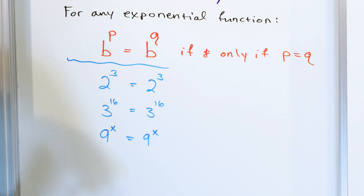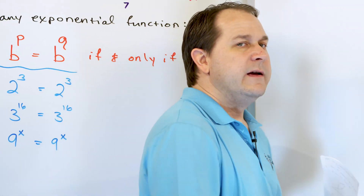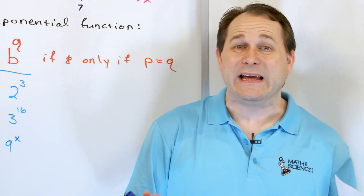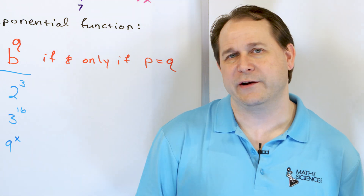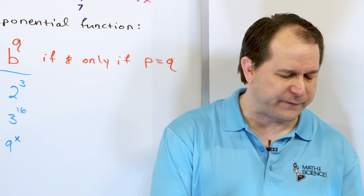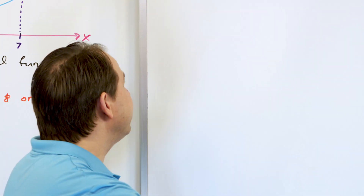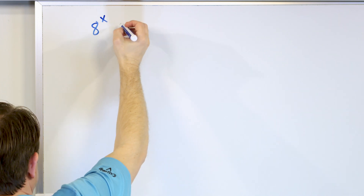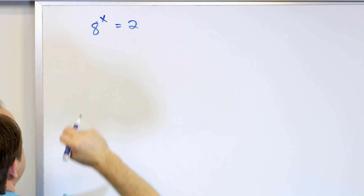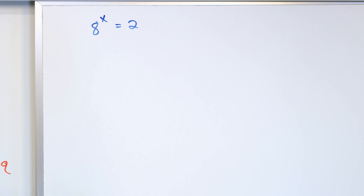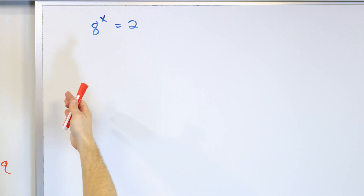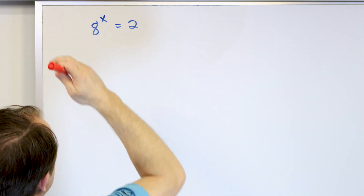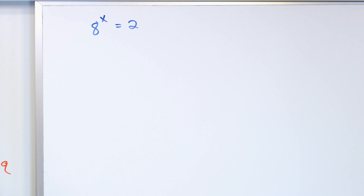Now we're going to use this property to solve exponential equations. The first example is very simple — simple enough that you could figure out the answer without much work. We have the equation: eight to the power of x is equal to two. Some of you might be able to figure out the power just by looking at it.